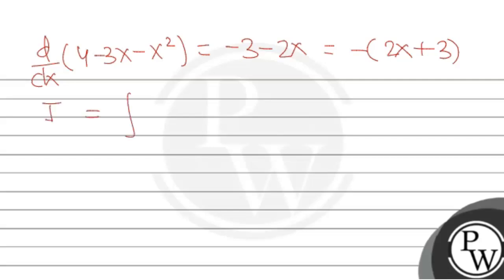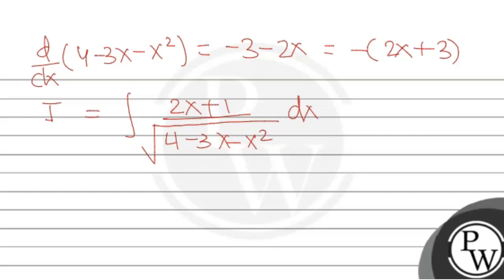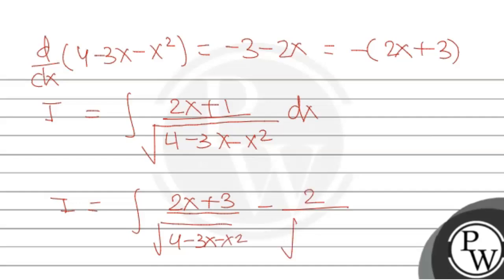Let I = integral of (2x + 1) upon √(4 - 3x - x²) dx. We can write the numerator 2x + 1 as (2x + 3) minus 2, so this becomes: integral of (2x + 3) upon √(4 - 3x - x²) dx minus integral of 2 upon √(4 - 3x - x²) dx. We need to turn 2x + 1 into 2x + 3.